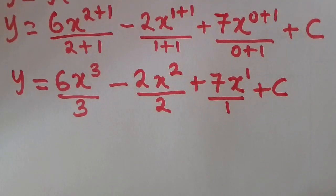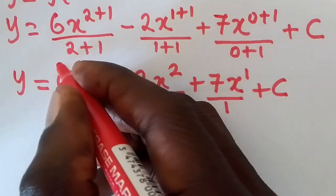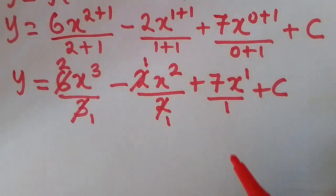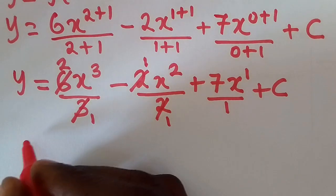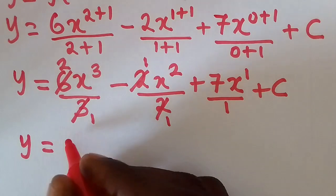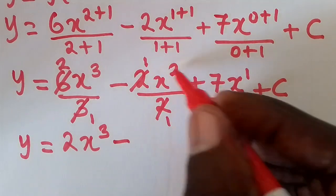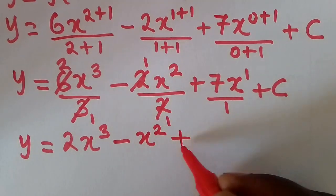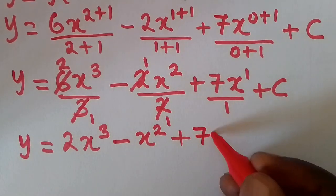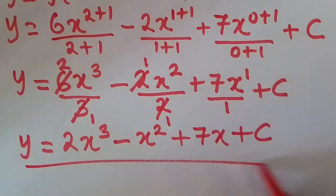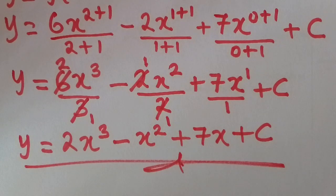We simplify: 3 goes into 6 twice and into 3 once, giving 2; 2 goes into 2 once giving 1; 7 over 1 is just 7. So the final answer is y equals 2x cubed minus x squared plus 7x plus c. This is our answer for the integration, completing part a, and we now move to part b of question 19.